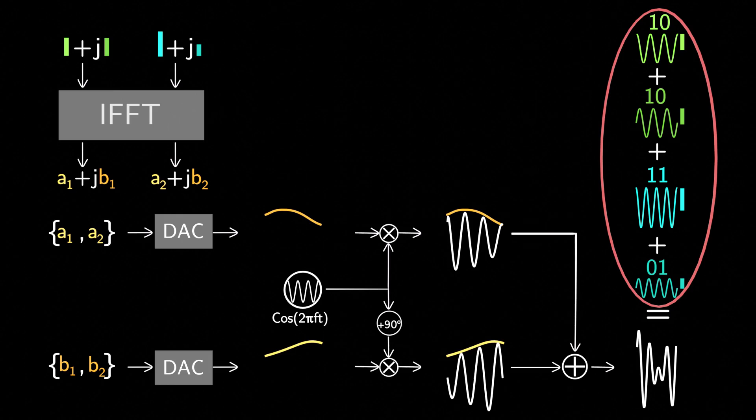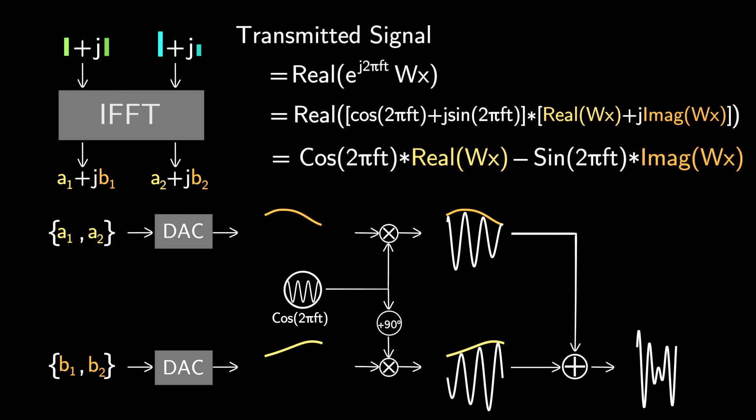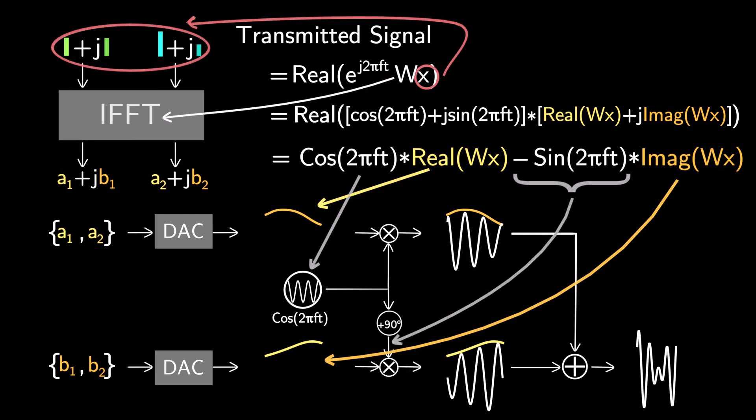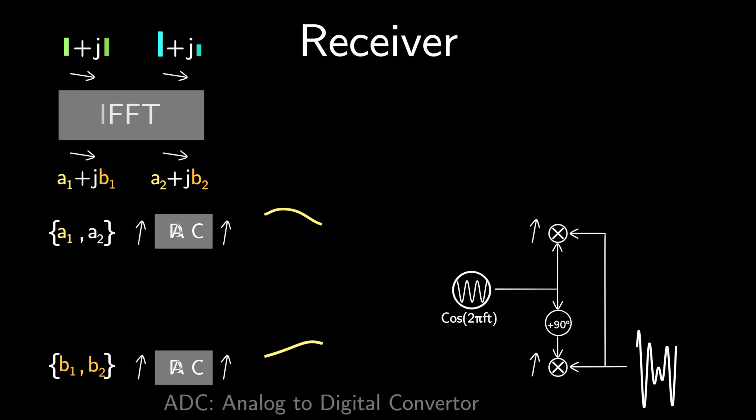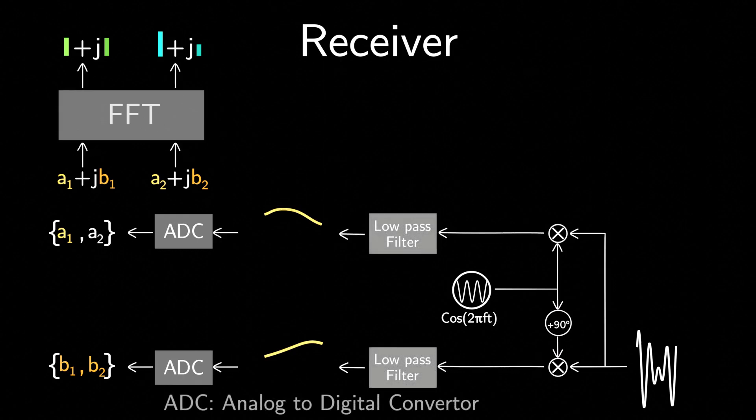I will explain why they're equivalent in another video, but if you're curious about the math behind it, here's the equation. At the receiver side, all these steps are simply reversed. Note that F is the carrier frequency, which can be a frequency between 400 MHz to 71 GHz in 5G systems.